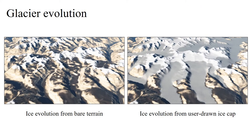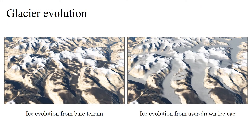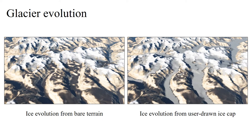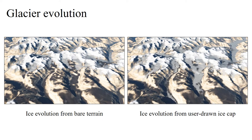The steady state of a glacier depends on the terrain and control parameters, but not the initial conditions. For example, an initial user-drawn ice cap on the right flows down and eventually melts, resulting in the same state as in the left simulation.